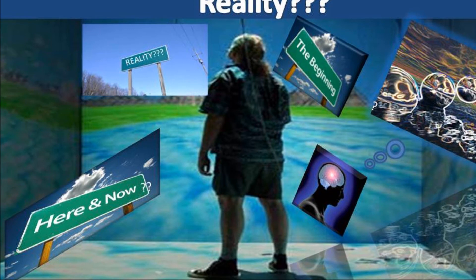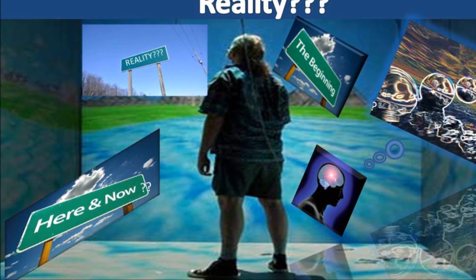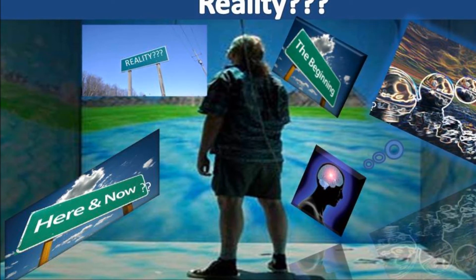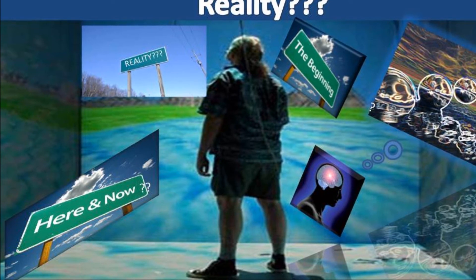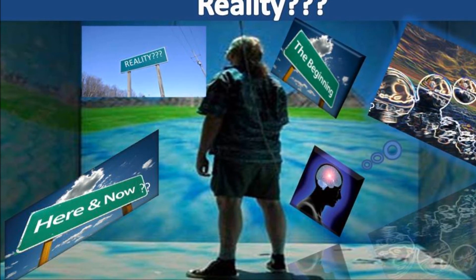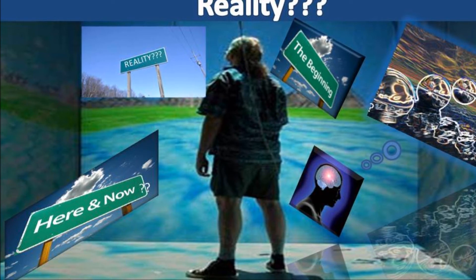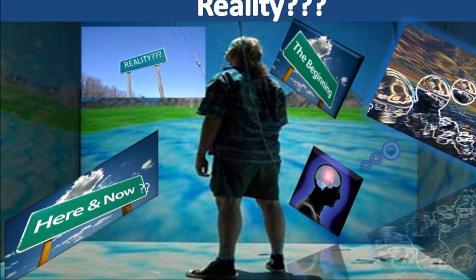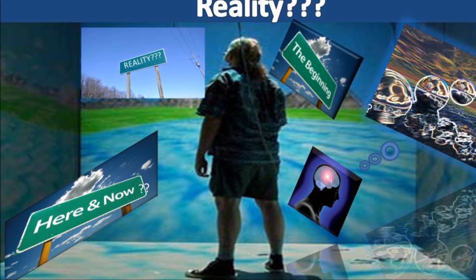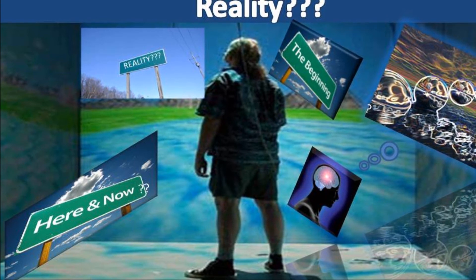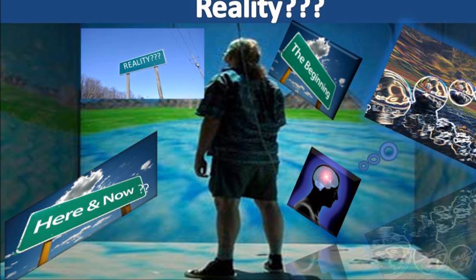We're prisoners of our own neural architecture. We can visualize some things. We can't visualize others. Einstein's abstract four-dimensional geometry was hard to concretely visualize. It became visualizable through mathematical relations.